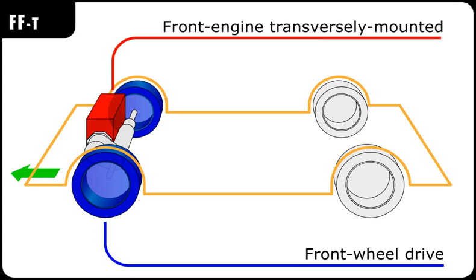The first popular transverse engine forward cars were the DKW, made from 1931, which had a twin-cylinder two-stroke engine.